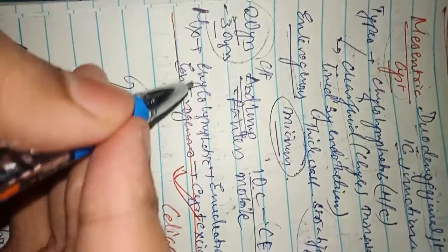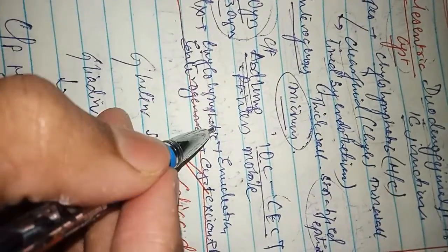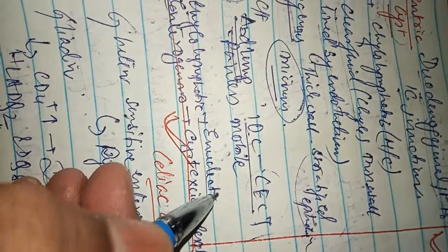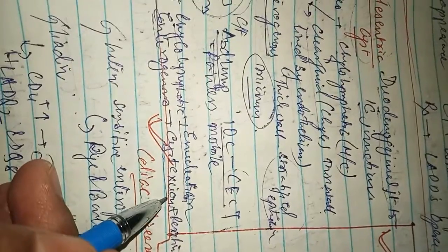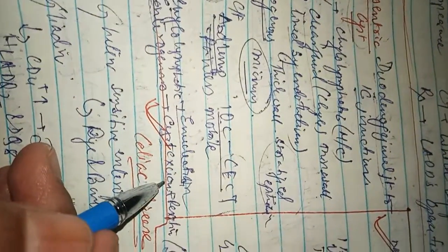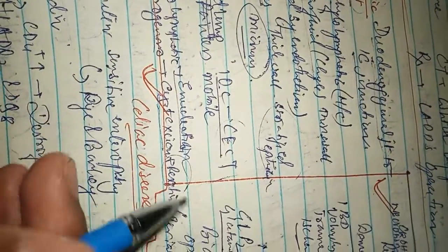Regarding management: if it is the chylolymphatic type, we have to enucleate the mesenteric cyst. If it is the enterogenous type, we have to do cystic excision of the mesenteric cyst along with resection of the bowel.